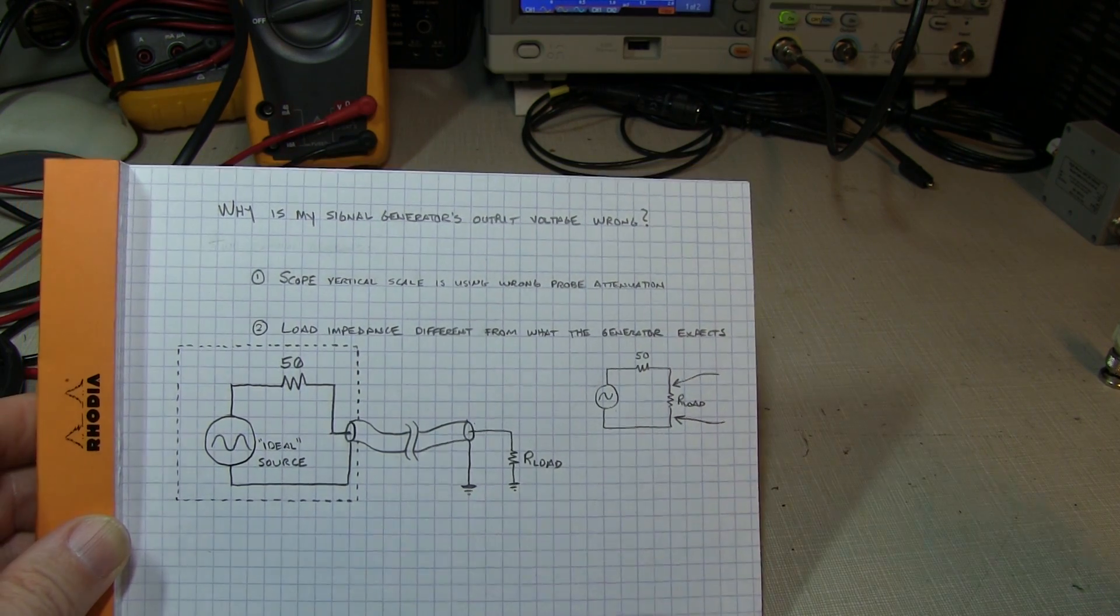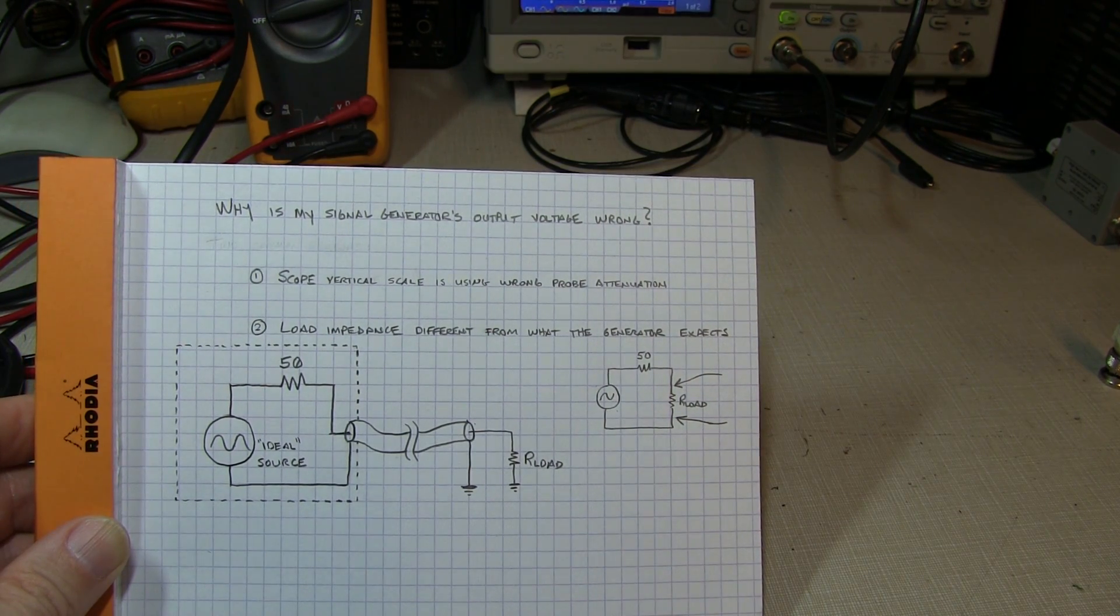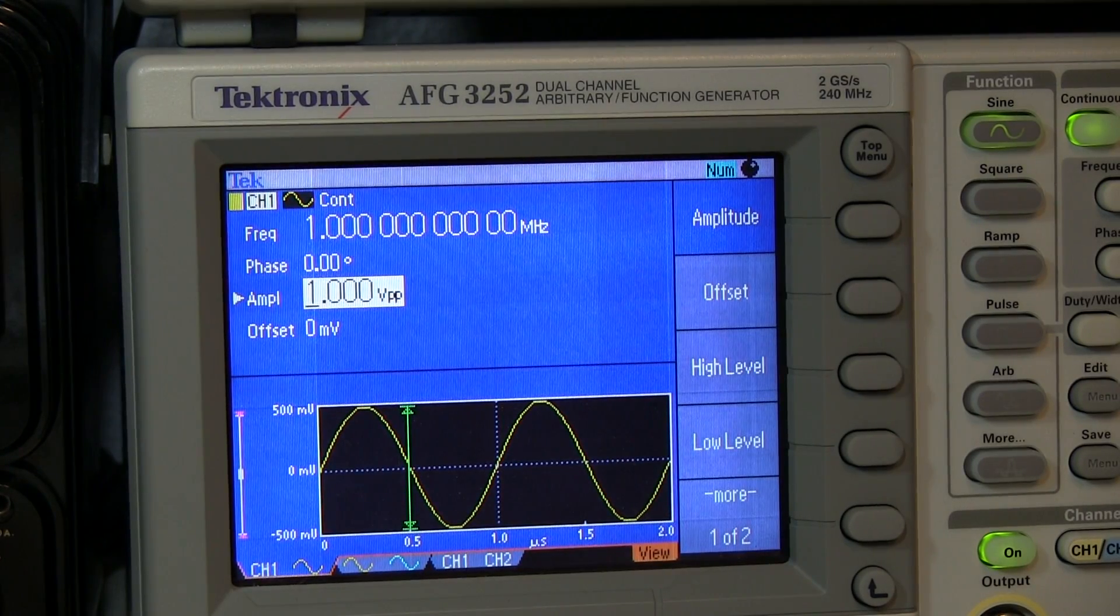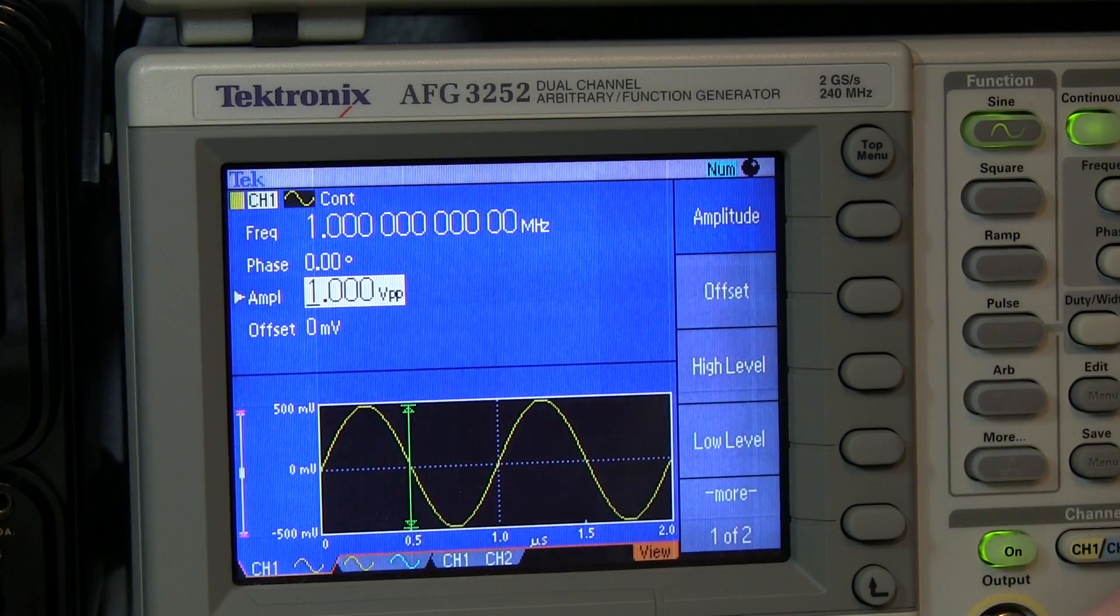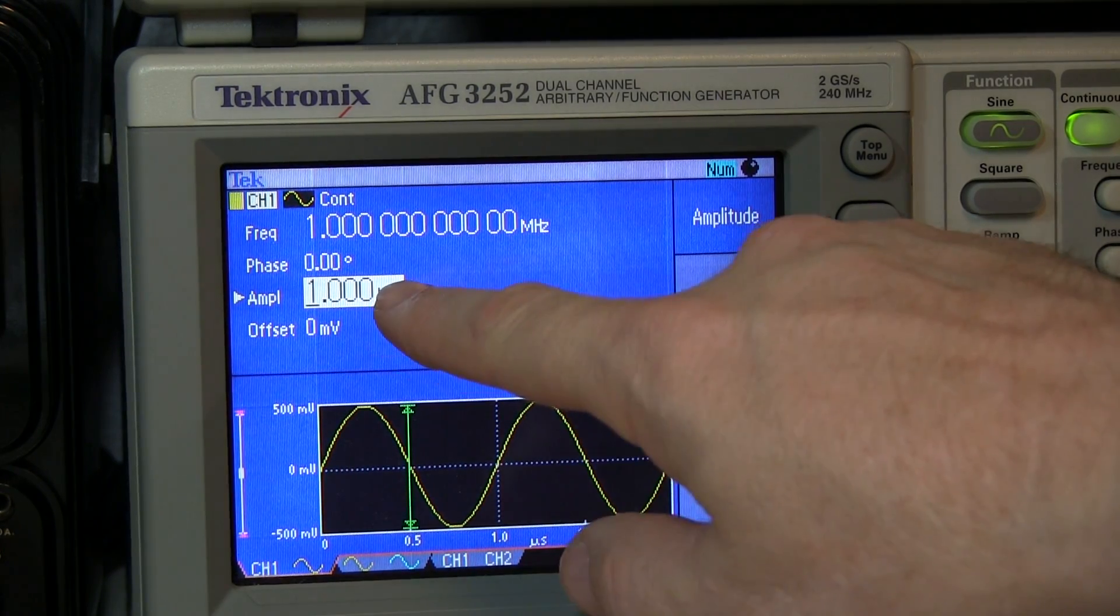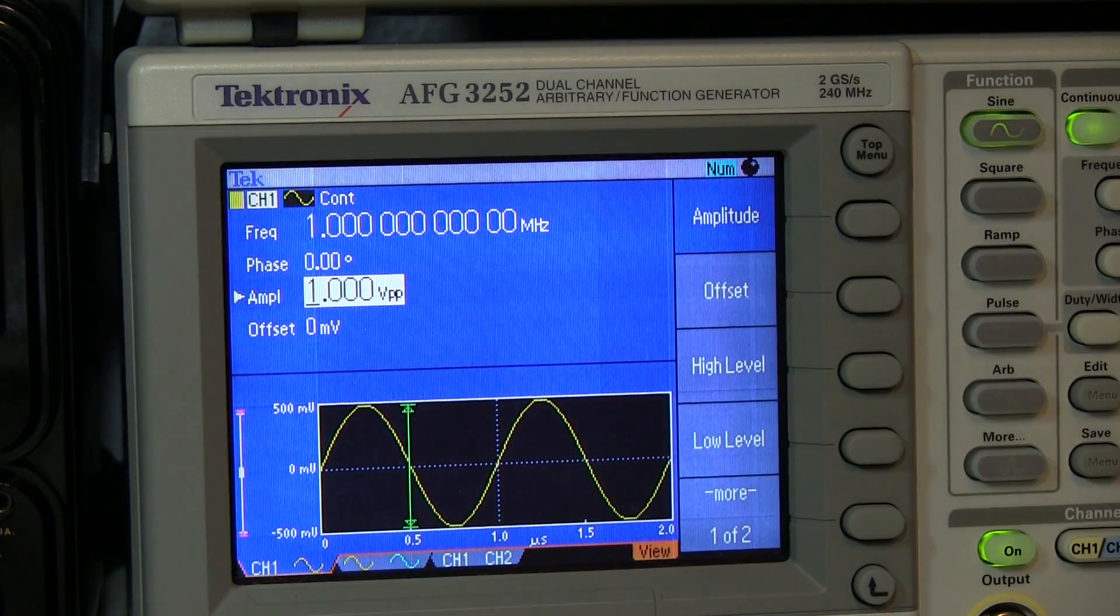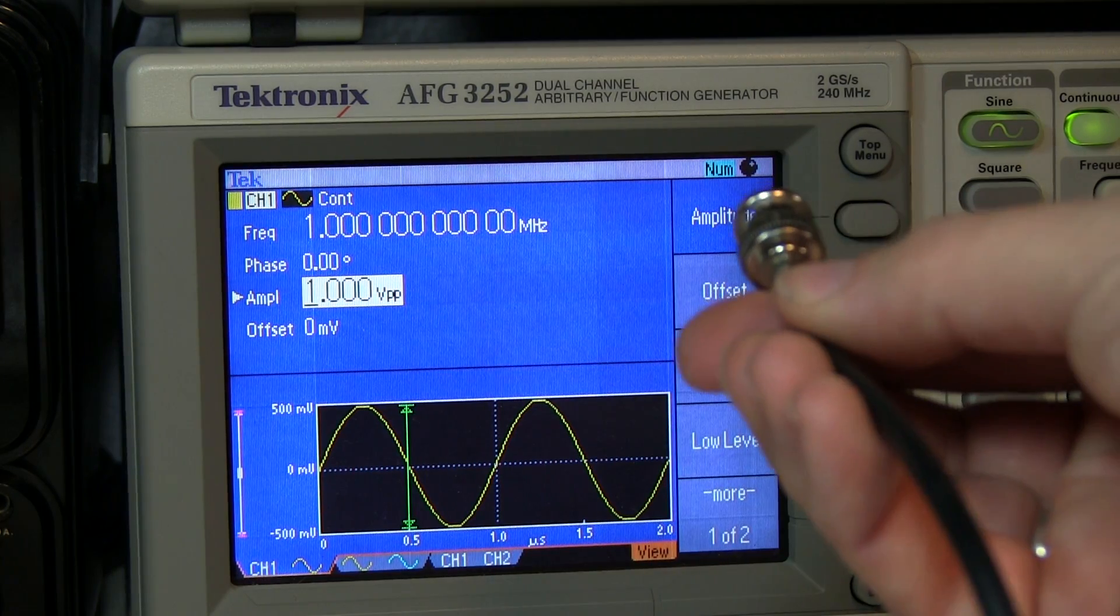So I'll show you what that looks like on the equipment. So here's an example where we have a one megahertz sine wave set up out of the function generator at one volt peak to peak. So if we simply connect this directly up to the scope, take a look at what the scope is showing me.